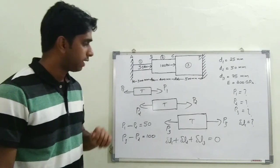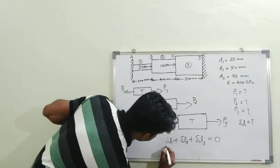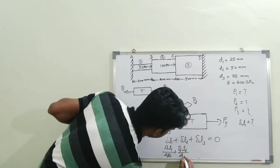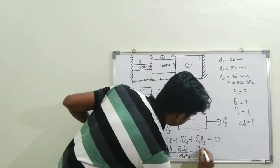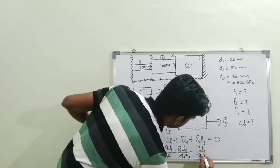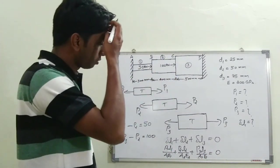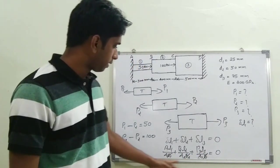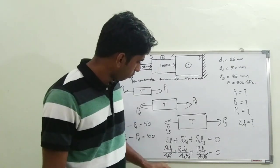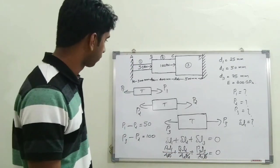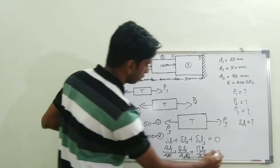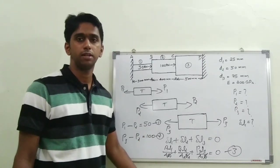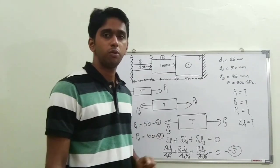Substituting the deformation formula: (P1·L1)/(A1·E1) + (P2·L2)/(A2·E2) + (P3·L3)/(A3·E3) = 0. Since E is common (same material), it cancels out. Areas and lengths are different, so we compute the coefficients of P1, P2, and P3. Now with three equations and three unknowns, we can solve using a calculator to find P1, P2, and P3.